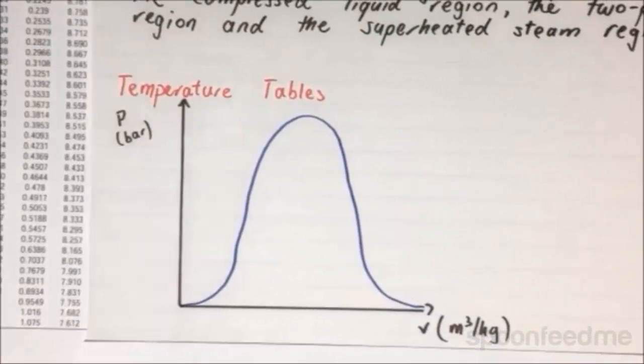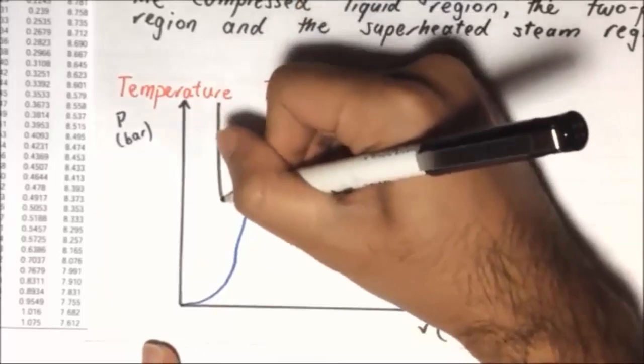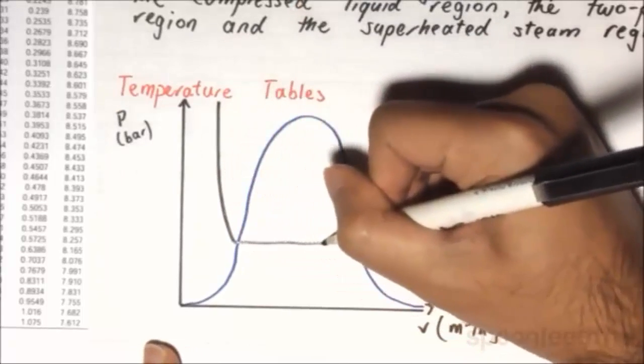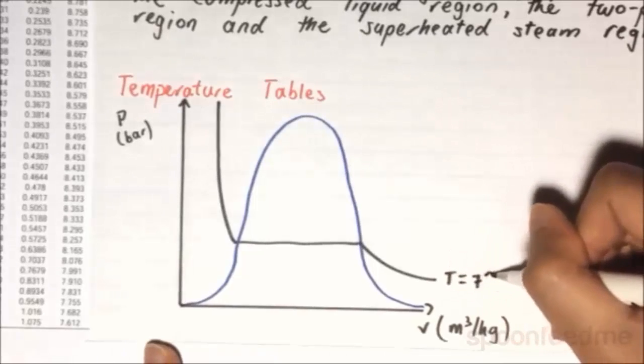So we look at this table with respect to a PV diagram. For example, if we create an isotherm, let's say it is 70 degrees Celsius. So it will be quite far down, T equals 70 degrees Celsius.